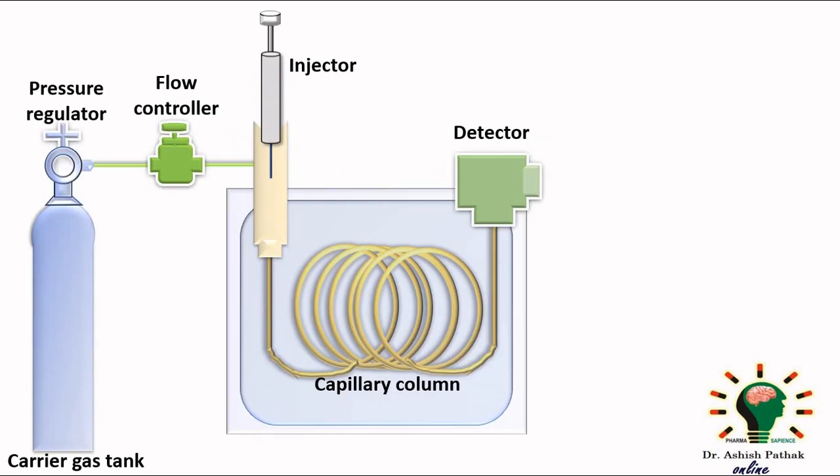Solutes which have less affinity for the column material will elute first and reach to the detector, and we see the signals in display unit.